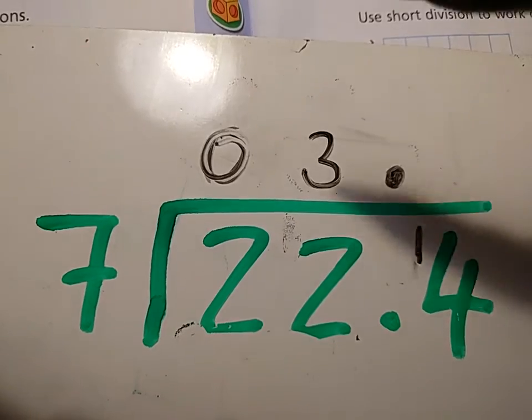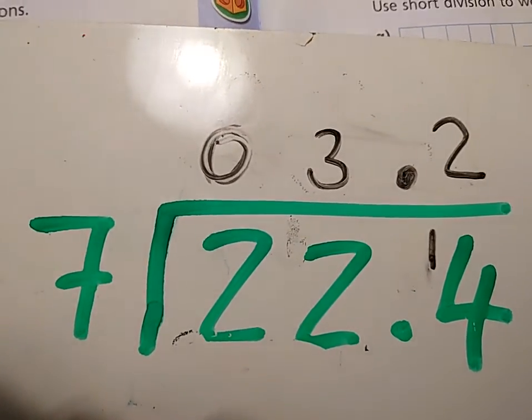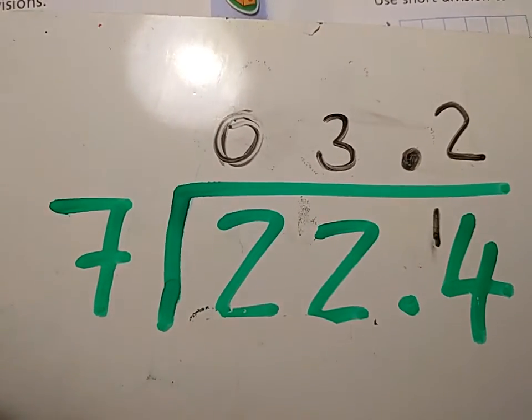And then, how many times does 7 go into 14? Nice and easy. 2. So 22.4 divided by 7, dead easy, 3.2.